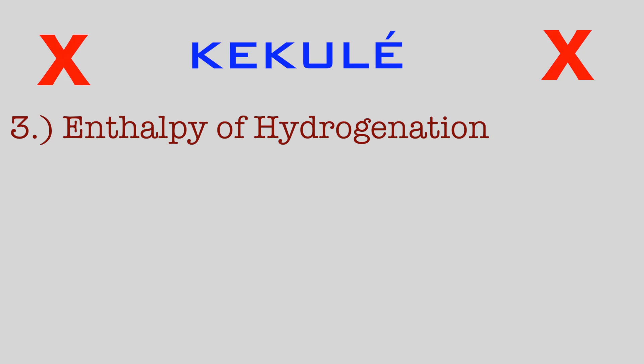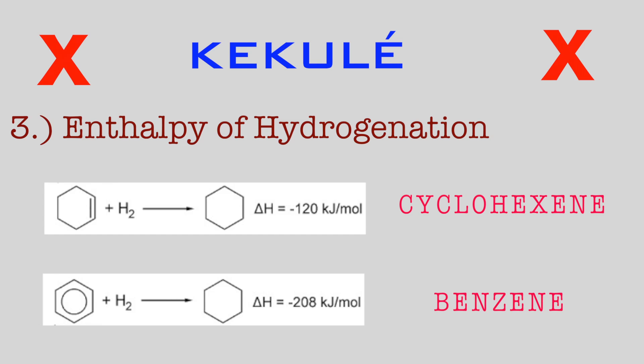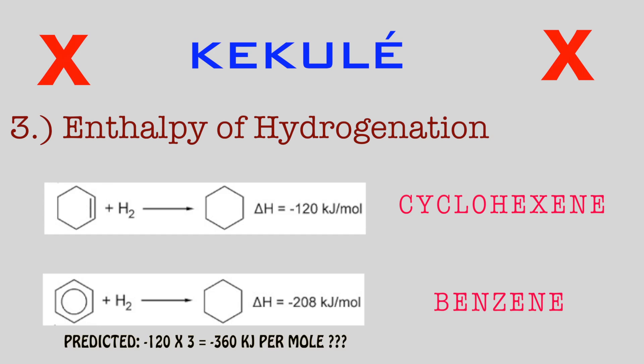The third and final piece of evidence to repudiate the Kekulé model concerns enthalpy of hydrogenation. The enthalpy of hydrogenation of cyclohexene is -120 kJ/mol, but the enthalpy of hydrogenation of benzene is -208 kJ/mol. Because benzene has a similar structure to cyclohexene but with three double bonds instead of one, it would be predicted that benzene's enthalpy of hydrogenation is three times that of cyclohexene — but it is not, indicating that benzene does not have three double bonds as Kekulé proposed.